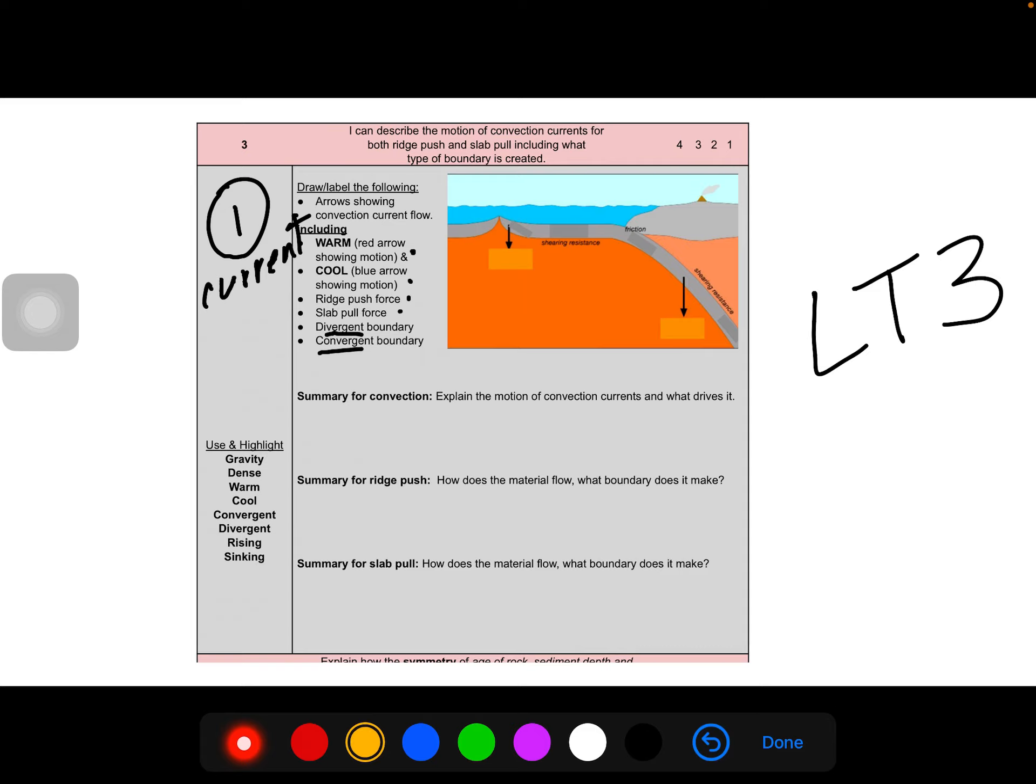And you have a short description you're going to write in for convection. We did that in our notes. Highlighted it up. Short definition for ridge push. Thinking about what the motion of that interior material is and the boundary it's connected with. And same thing for slab pull. So you're describing that part of the convection and what boundary it makes. So if you're feeling stuck, go back to that first diagram that we worked together in this review. Kind of look at those colored arrows and use that to help describe if it's warm rising, cool sinking, and what boundary is it connected with.